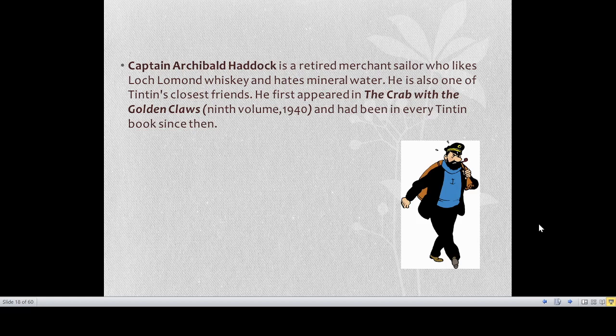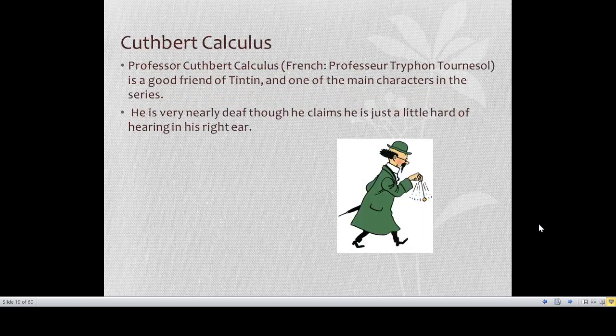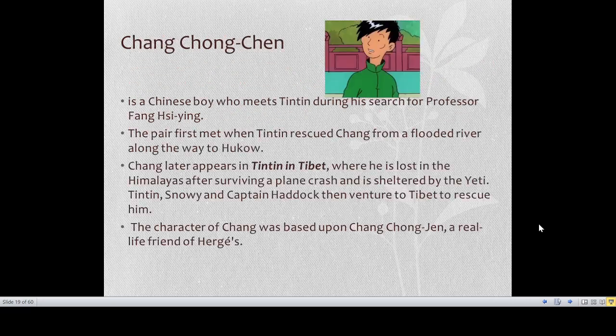Captain Archibald Haddock is a recurrent persona in all the Tintin adventure series. He is a retired merchant sailor who likes Loch Lomond whiskey and hates mineral water, and he is one of Tintin's closest friends. He first appeared in The Crab with the Golden Claws and has been in every Tintin book since. Professor Calculus appears only in one or two pages of this particular adventure; he is a good friend of Tintin and one of the main characters of the series, though he is very nearly deaf — though he claims he is just a little hard of hearing in his right ear.